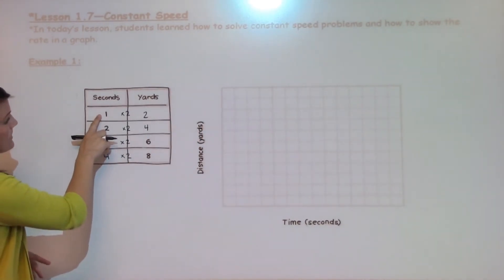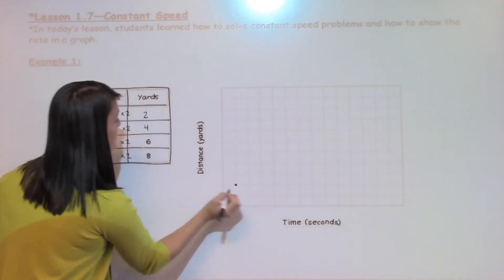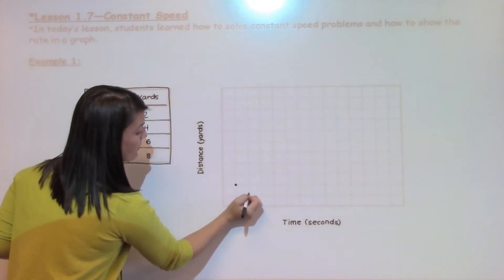I am going to take 1 and 2. I am going to go over 1 and up 2. Then I am going to go over 2 and up 4.